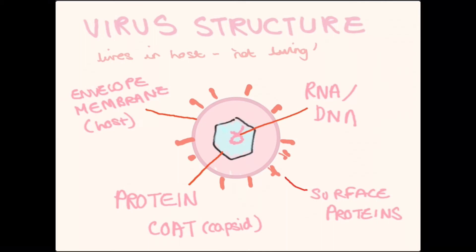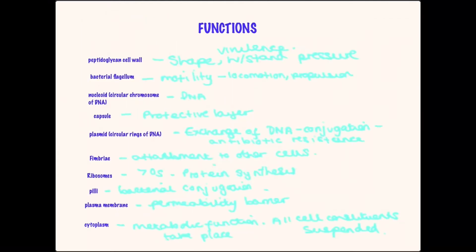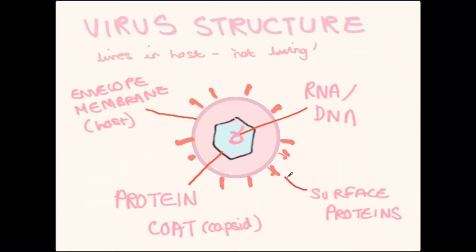Now that we know the structures, let's compare. Lastly, the RNA and DNA are the genetic material of the virus. Since the virus does not have ribosomes or any other organelles, we can see that viruses get their energy from the host cell. That is why the virus structure is much simpler than the prokaryotic cell.